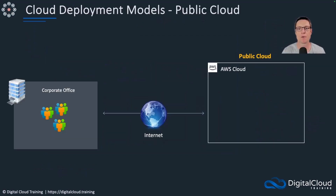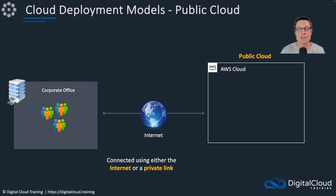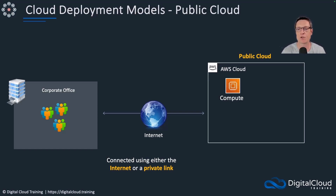The public cloud is a cloud service where multiple customers and organizations are utilizing it, and anyone can sign up and start using it. We might be using it across the internet directly, or connecting our corporate office through the internet via a VPN connection or a private link. If we provide that network-layer connectivity from our office or data center into the public cloud — especially if we're also deploying infrastructure locally — that becomes a hybrid cloud.